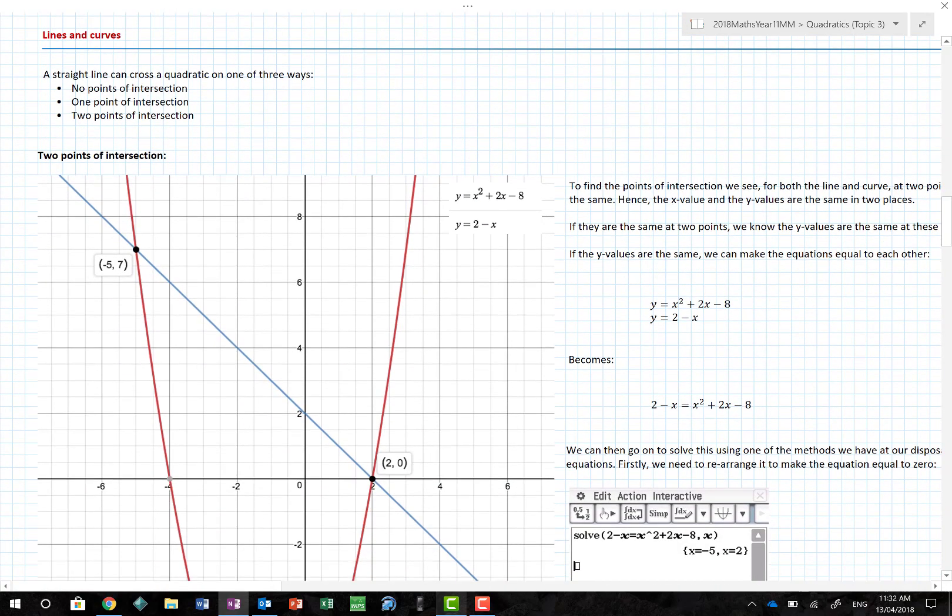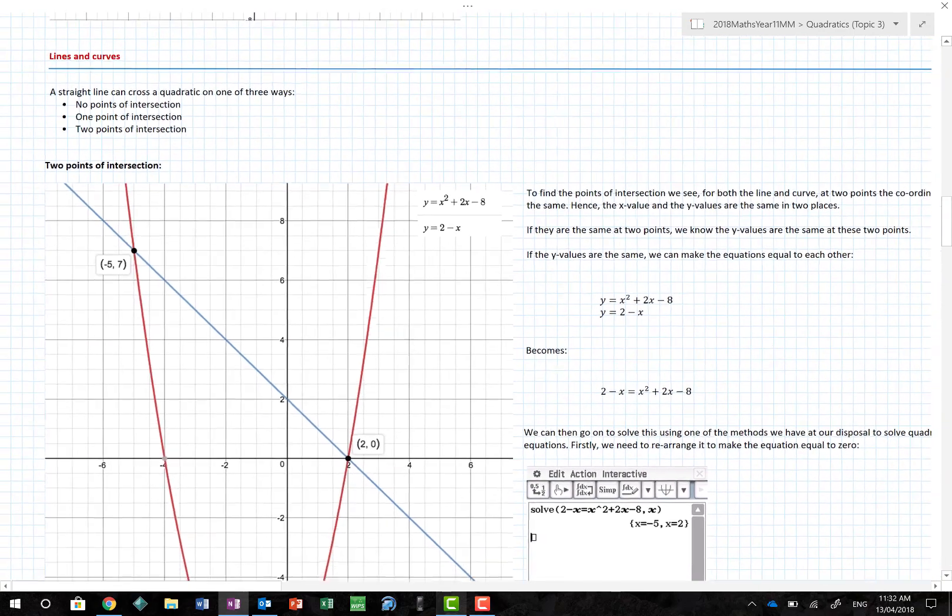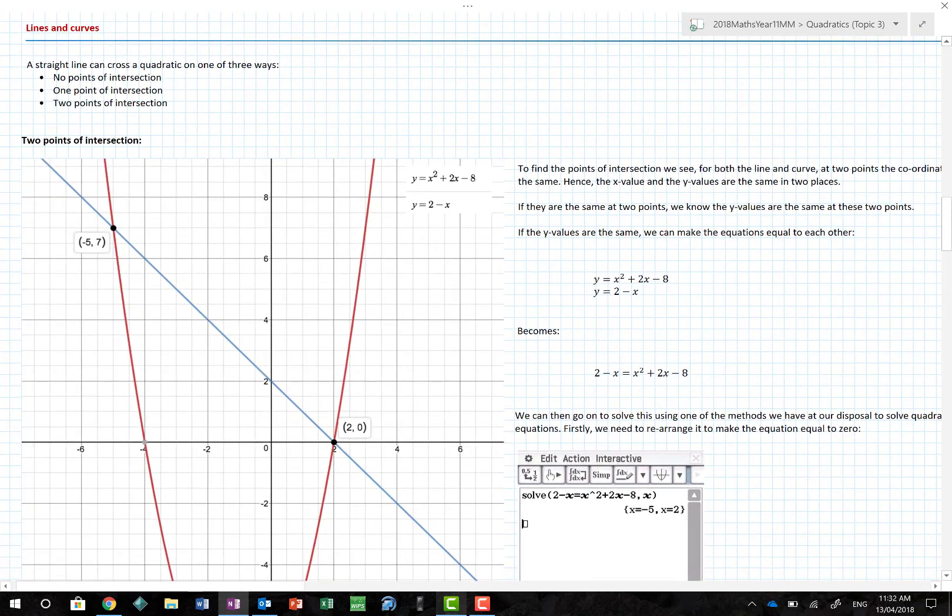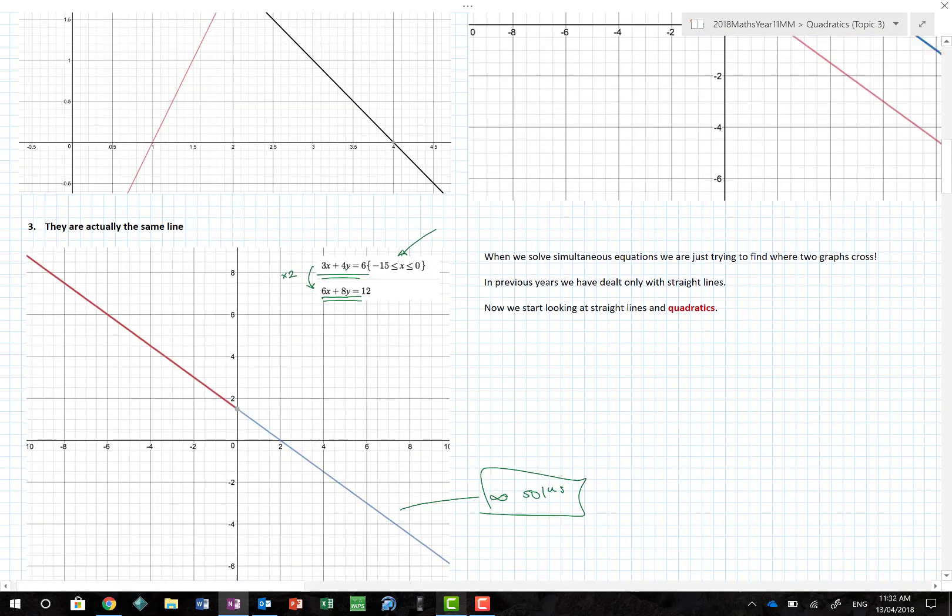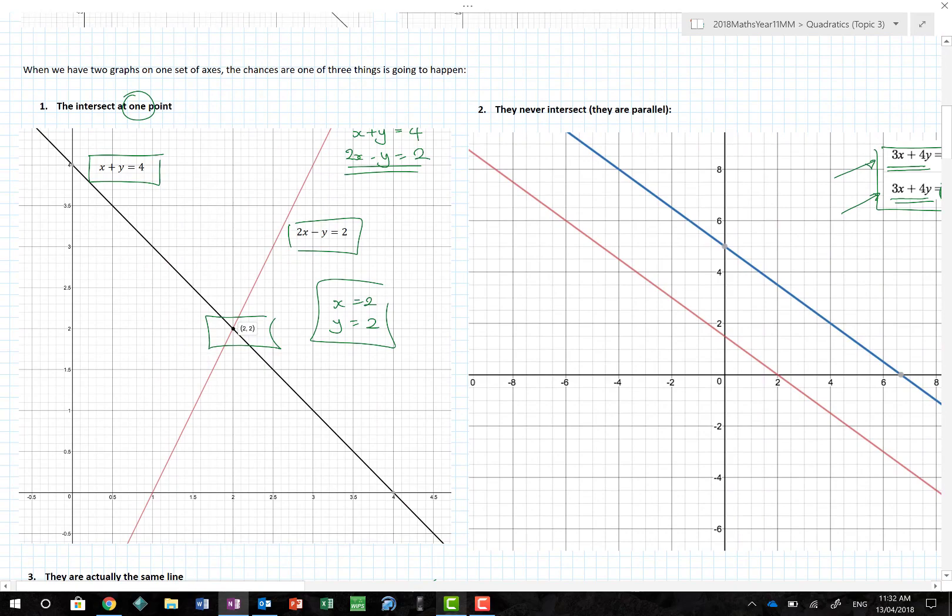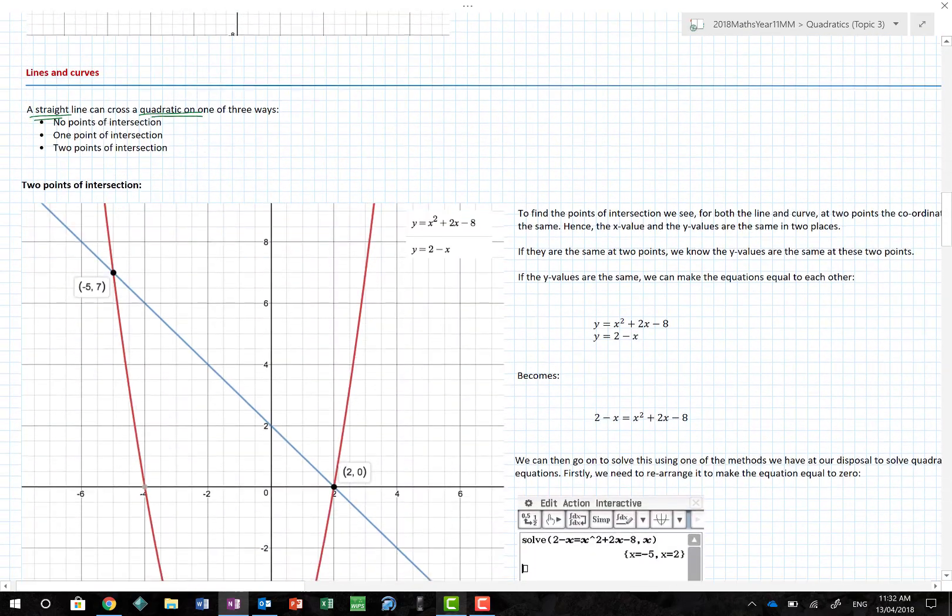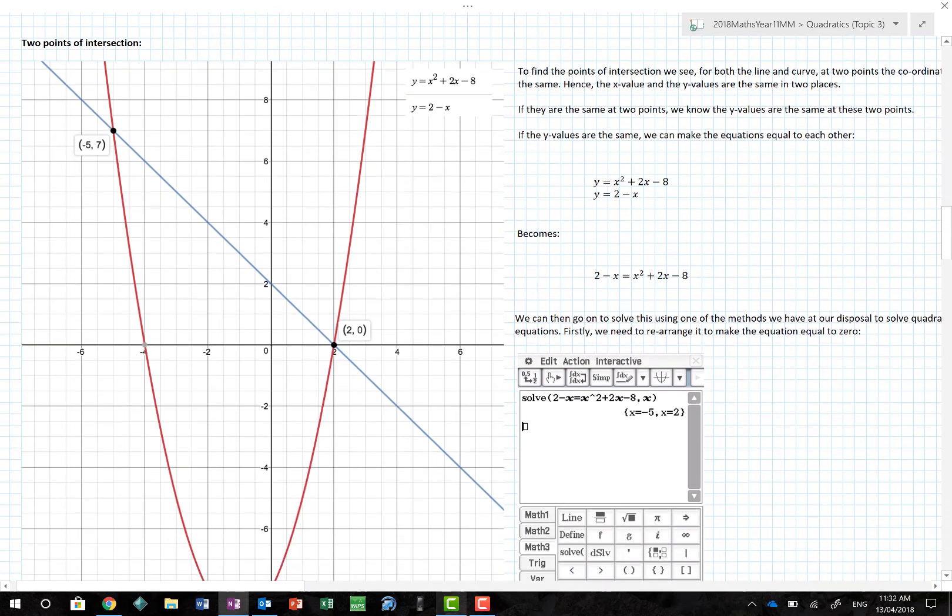Now, what does this got to do with lines and curves? If you think about it, a straight line can cross a quadratic in one of three ways. We have the same situation here. They could cross once, they could never cross, or they could basically be the same line.